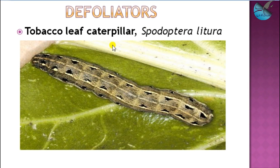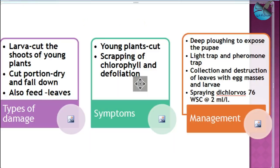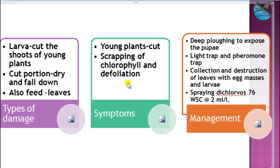The second category is the defoliators. The main pest here is the tobacco leaf caterpillar, Spodoptera litura. Having a biting and chewing mouthpart, the damaging symptom includes cutting of shoots from young plants, where the cut portion dries and falls down. Young larvae start by scraping the chlorophyll, causing a windowing effect — a white color layer forms due to absence of chlorophyll. In later stages, they cause complete defoliation by heavy feeding on the whole leaf.